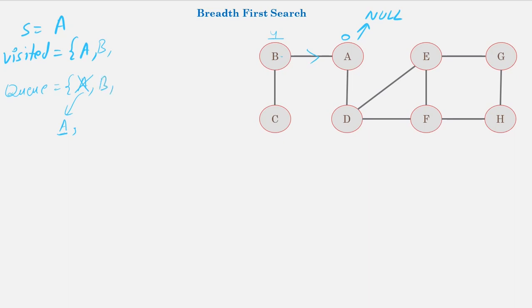Next we explore the adjacent vertex D of A. The parent of D is A, we mark D as visited and add it to the visited list. The level of D is zero plus one, which is 1. We add D to the queue. Now all adjacent vertices of A are explored, so we pop the next element from the queue.